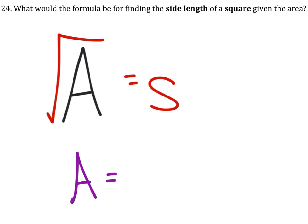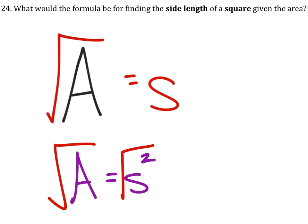This comes from the formula: the side length squared is the area, so we just square root both sides. That's how we got the single side length right there.